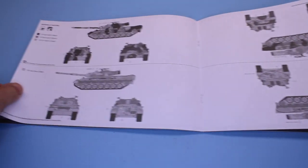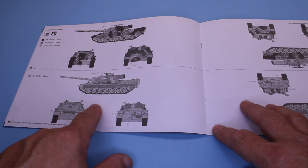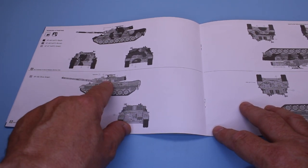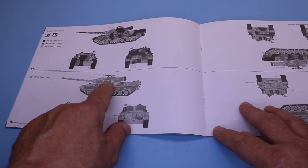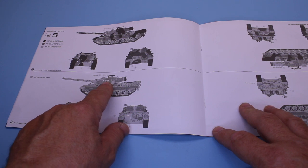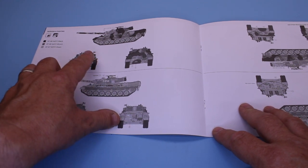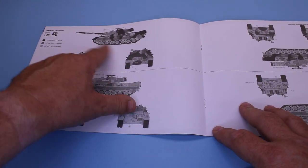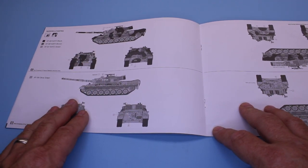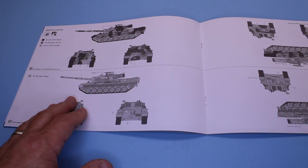Then they go into the paint scheme of the vehicle. You can either do a Kosovo version, which is an olive drab or olive green, or you can do your standard NATO tri-color, black, brown, and green pattern here.